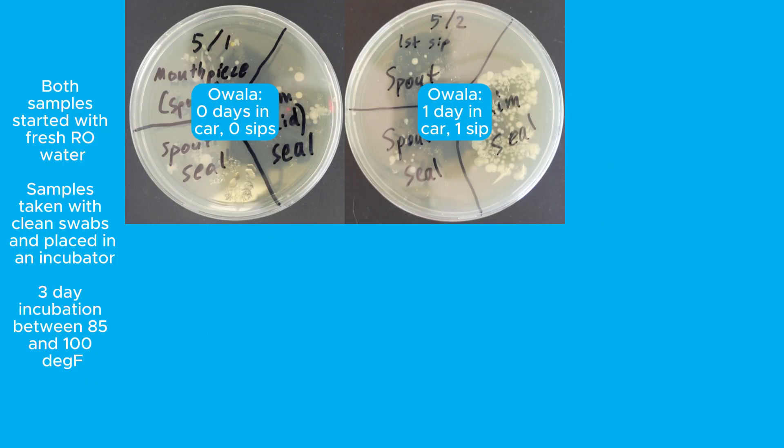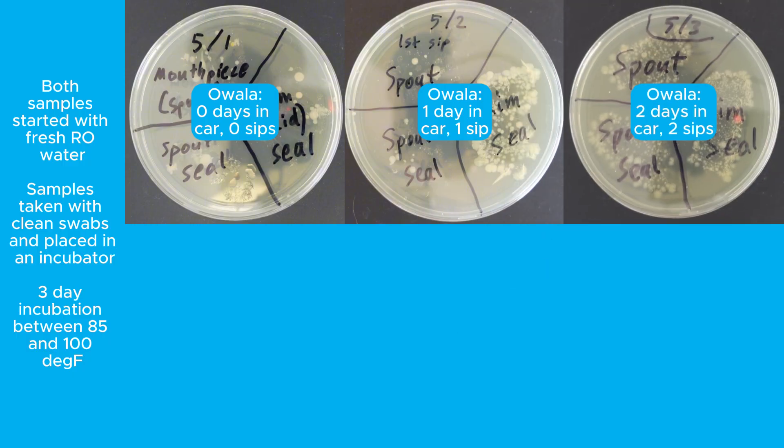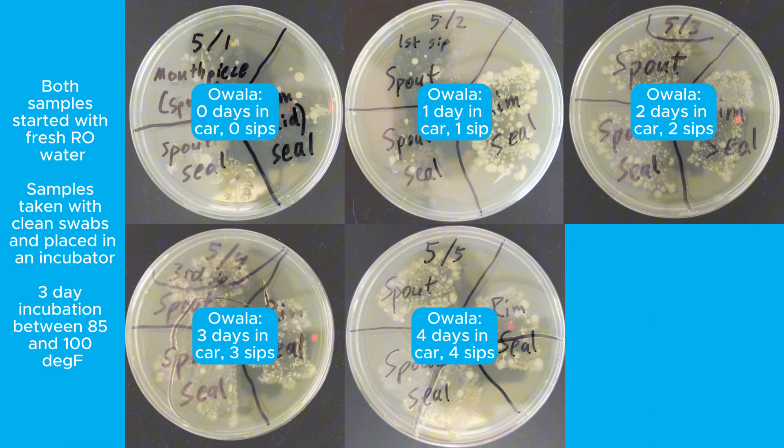But that changes when you look at the next sample, which was taken after 24 hours in the car and one sip and one chug from the spout. The rim seal in particular showed a lot more bacterial growth, but the spout and spout seal were still low. But after 48 hours in the car and two sips and chugs, you start to see more growth from the spout and the spout seal. And on the days after that, the samples start to look similar, and you can see high levels of bacterial growth from all sampled parts of the bottle.